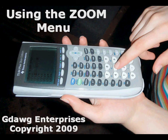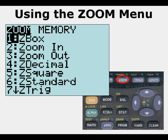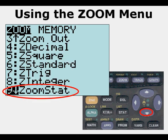Using the zoom menu. The zoom menu has several features in it. We're going to examine four of them today. We're going to examine zoom box, zoom square which is zoom 5, zoom 6 which is zoom standard, and finally zoom 9 which is zoom stat.